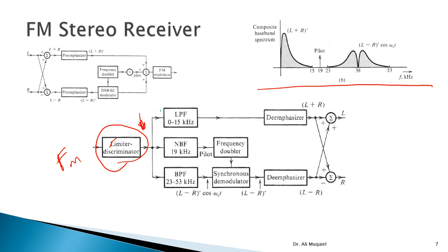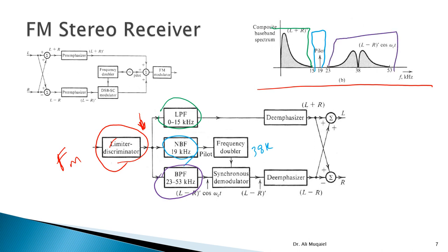At the receiver, the low pass filter in the upper branch recovers the left plus right signal. A narrow bandpass filter around 19 kHz extracts the pilot, which is then passed through a frequency doubler to produce 38 kHz. This 38 kHz carrier is used to demodulate a second bandpass filter output covering 23 to 53 kHz, which picks up the DSB-SC left minus right signal. The demodulator brings that signal back to baseband, recovering the pre-emphasized left minus right.